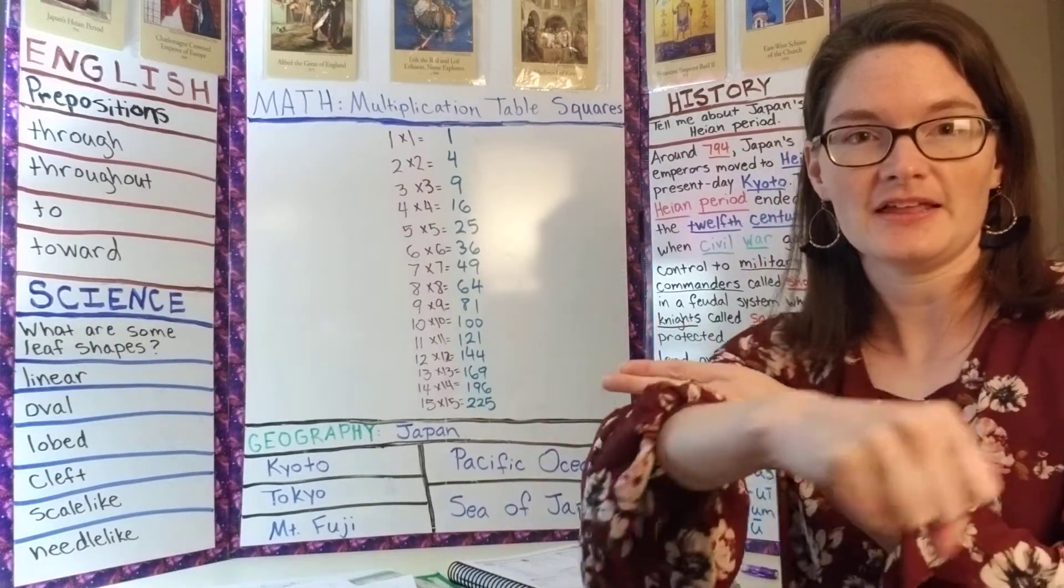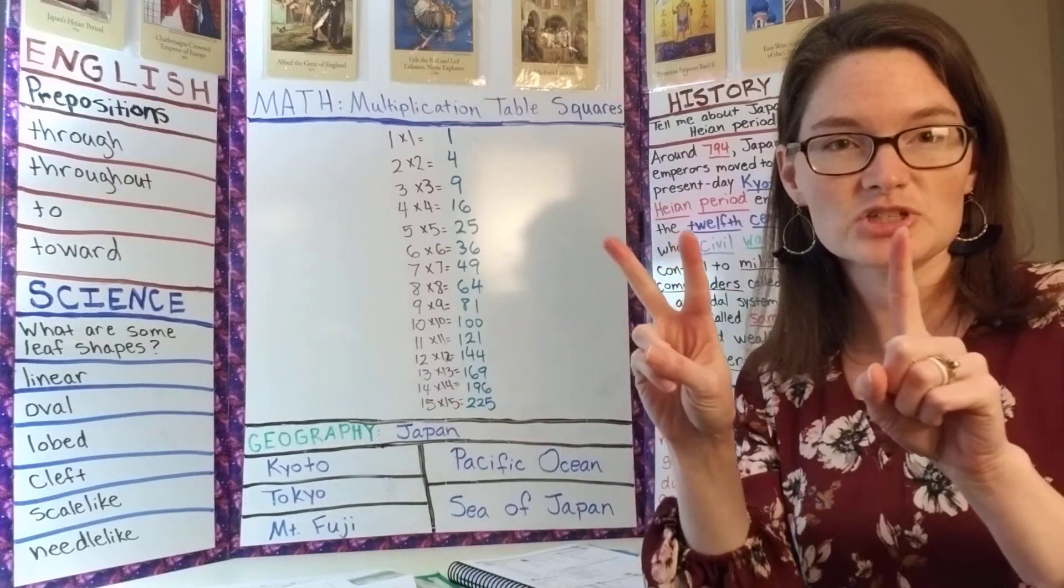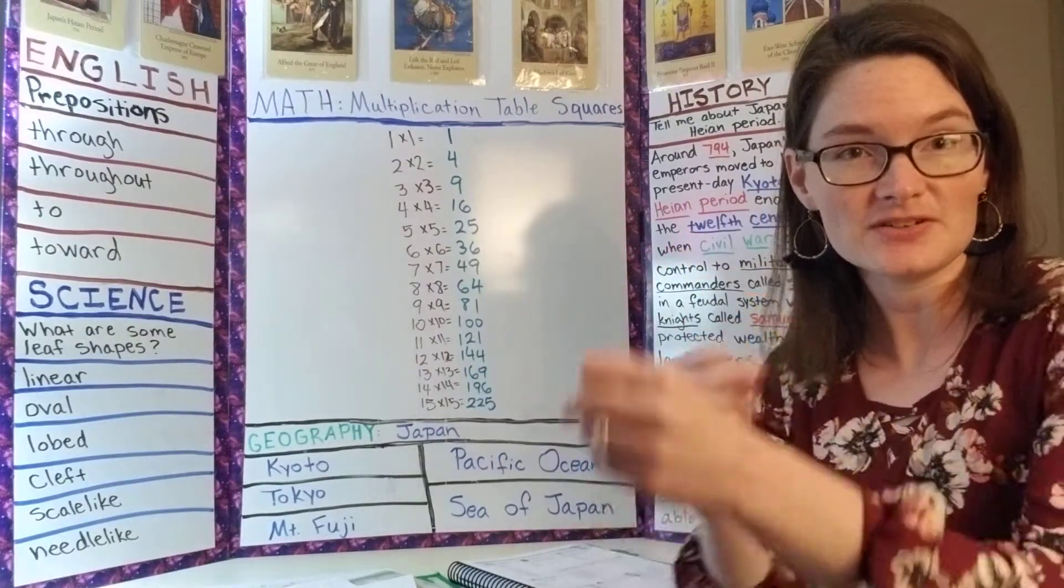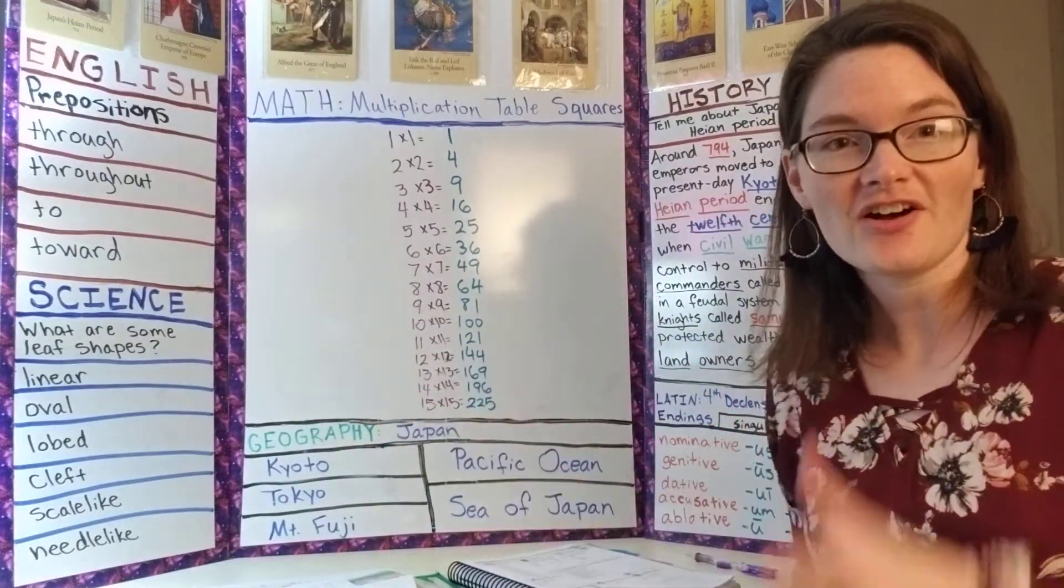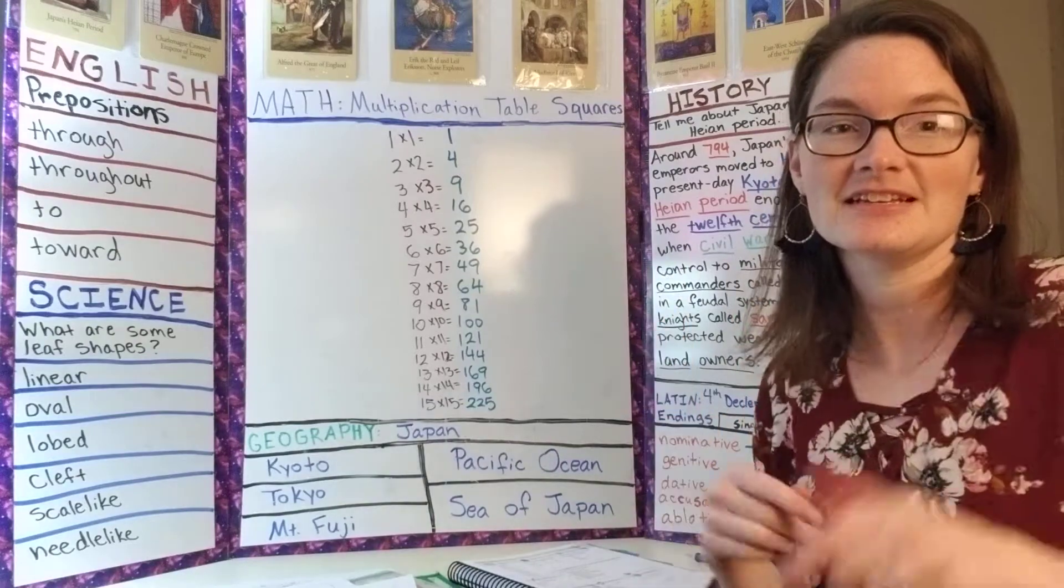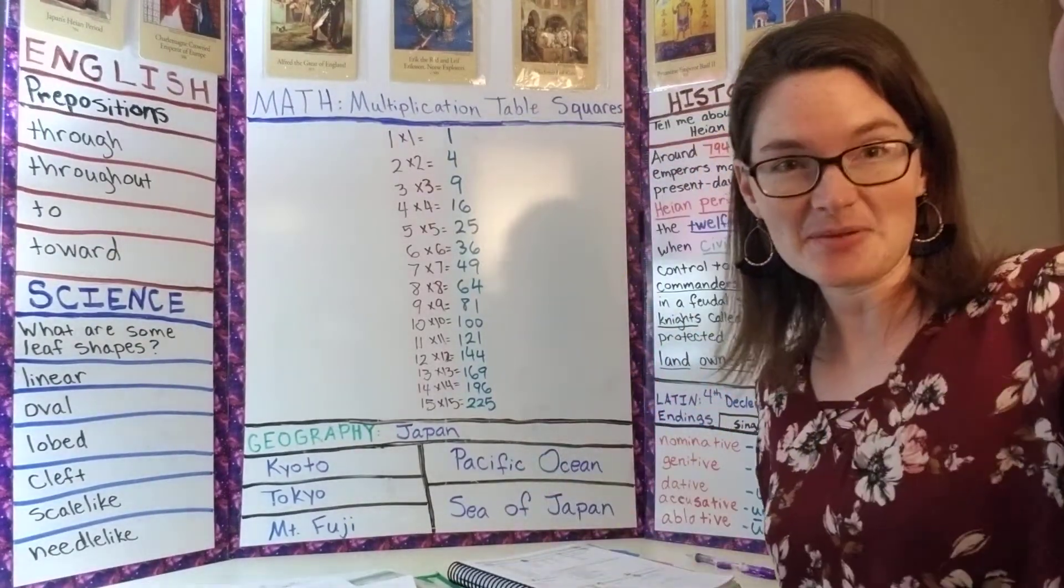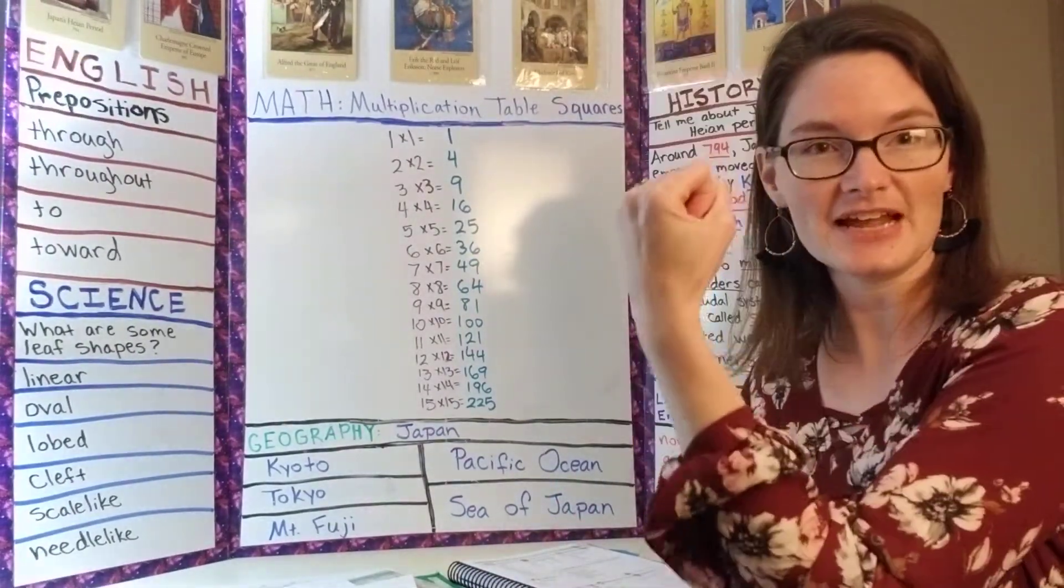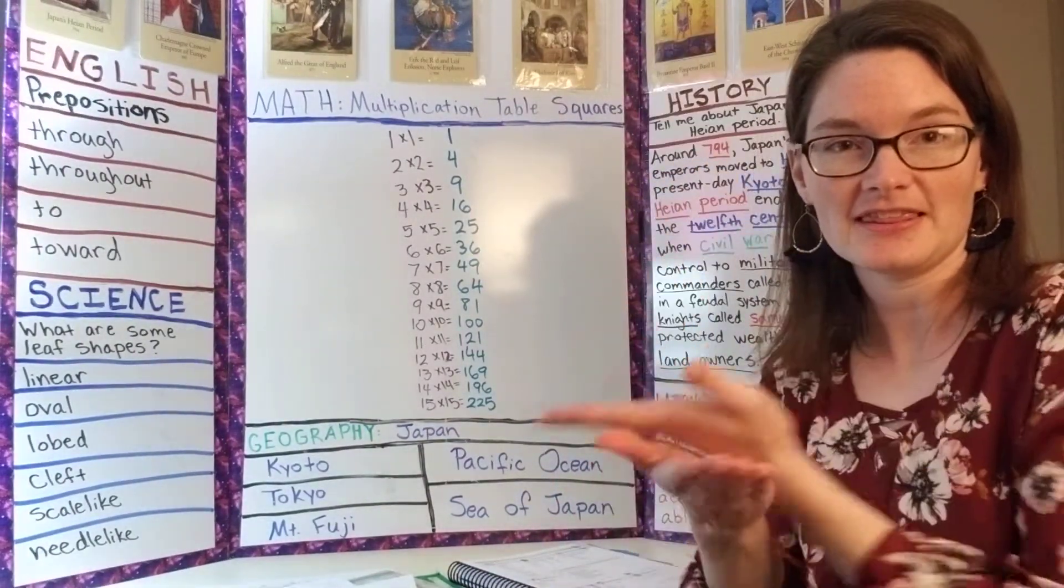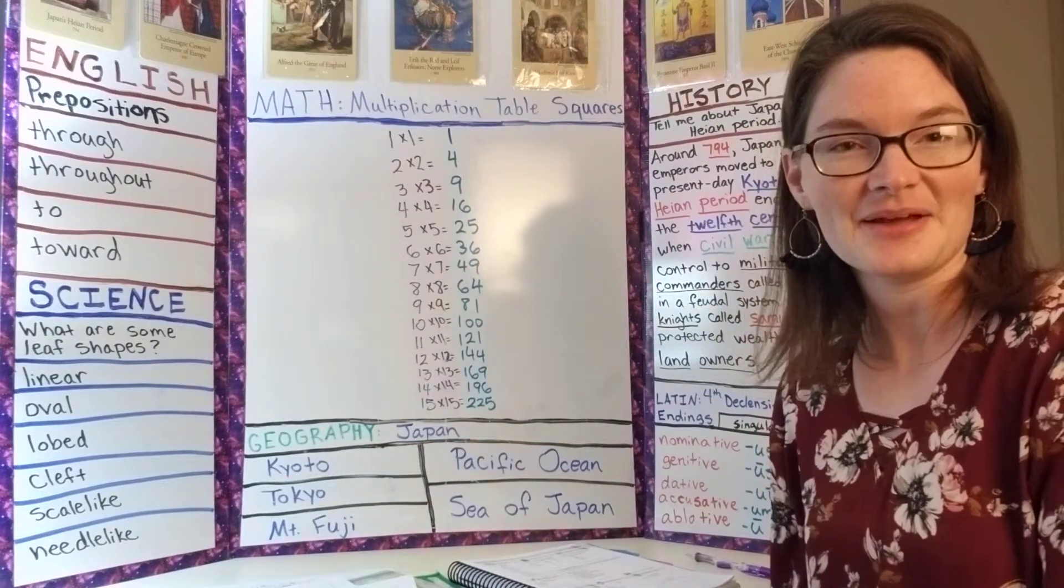Then we got the Heian period ended in the 12th century when civil war gave control to military commanders called shoguns in a feudal system where knights called samurai, like we're pulling out a sword, protected wealthy landowners. We did hand motions for that and we had a good time.